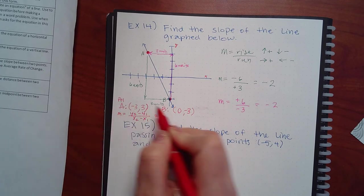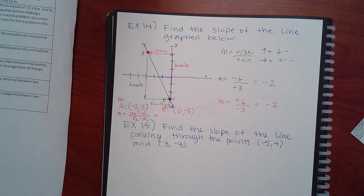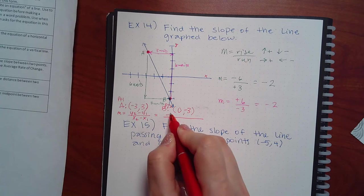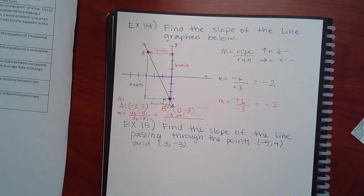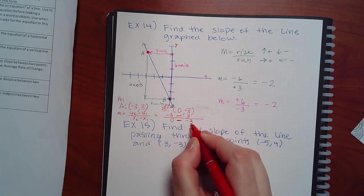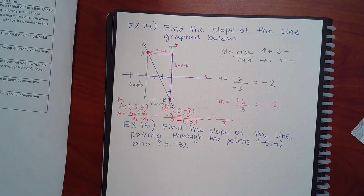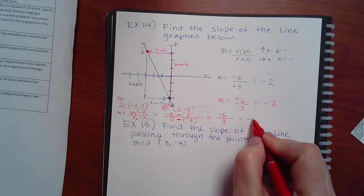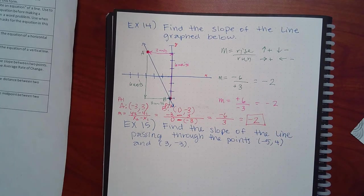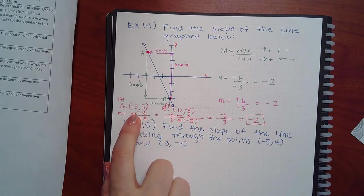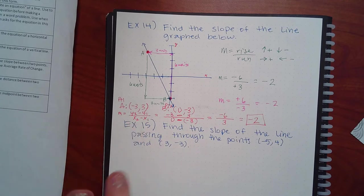Using the formula y2 minus y1 over x2 minus x1: calling A point 1 and B point 2, the second y-value is negative three minus the first y-value of three, over the second x-value of zero minus the first x-value of negative three. Negative three minus three is negative six; zero minus negative three becomes positive three. Negative six over three still gives negative two — same answer whether you count or use the formula.